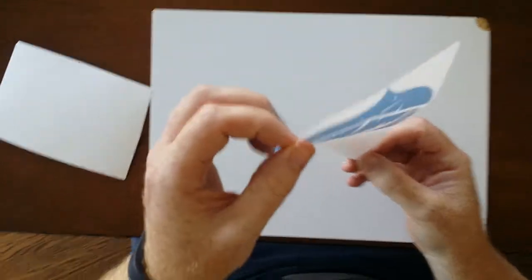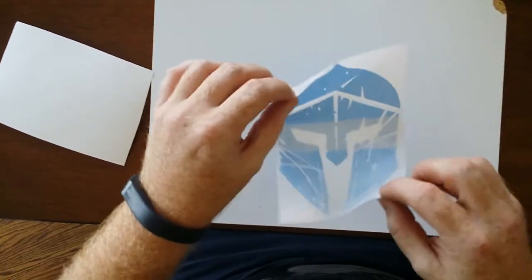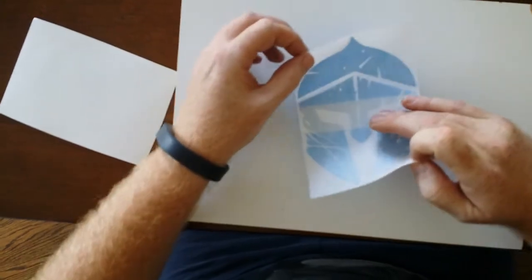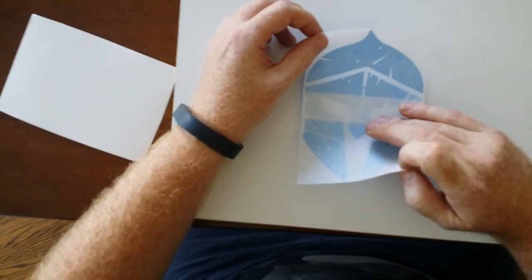Now once you have the backing off of there, what I like to do is kind of curve it and then you can place it in the position that you want.